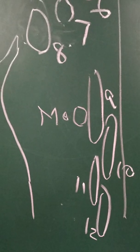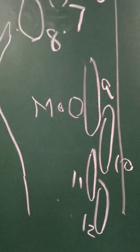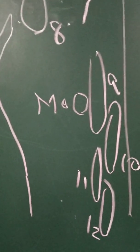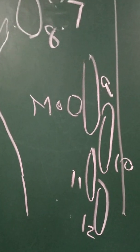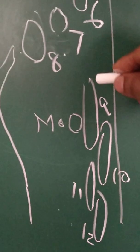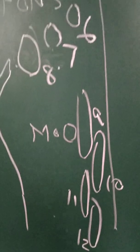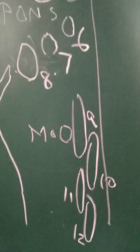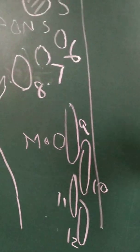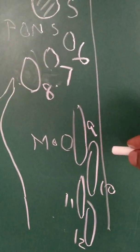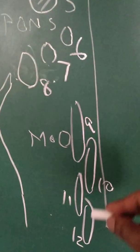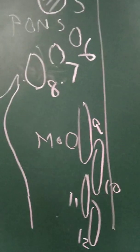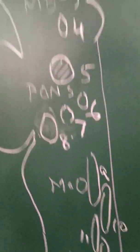The ninth, tenth, eleventh, and twelfth cranial nerves are present in the medulla oblongata. The ninth and tenth are in the upper medulla, and the eleventh and twelfth are in the lower medulla.